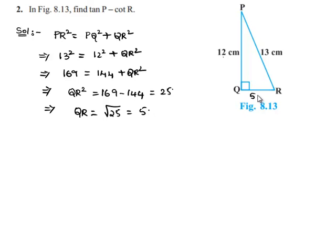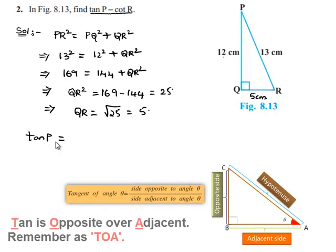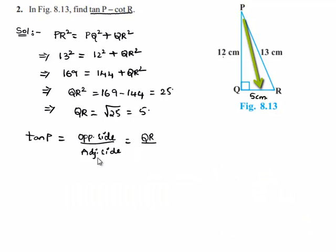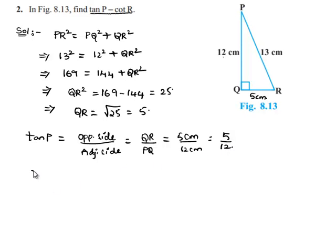Therefore QR is 5 centimeters. Now we need to find the value of tan P minus cot R. Let us separately find tan P and cot R. We know that tan of an angle equals opposite side by adjacent side. The side opposite to P is QR and the adjacent side to P is PQ, so tan P equals QR over PQ equals 5 over 12.